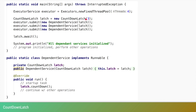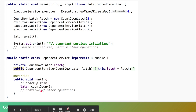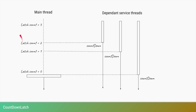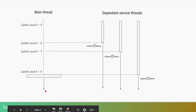To recap: we have a latch with count three, we start three services, and call latch.await. Once all three dependent services call latch.countDown, the latch is broken and the main thread can proceed. Visually, the main thread starts three dependent services; those three services can call countDown at different points in time, and once the last thread calls countDown the count becomes zero and the main thread proceeds.